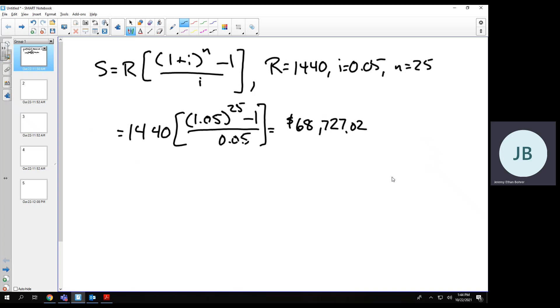That is, she will have approximately $68,727.02 in her account. This is the same as the amount she ended up with in her traditional IRA after paying taxes.